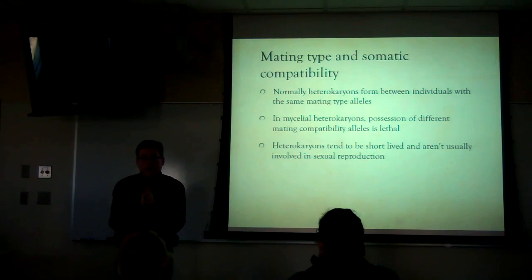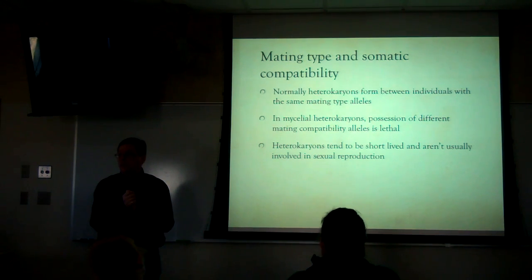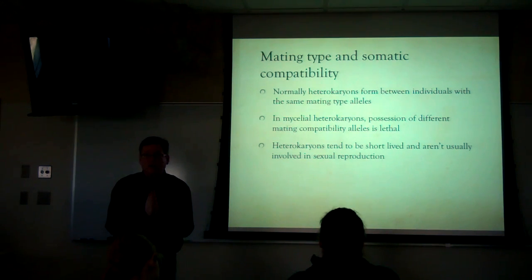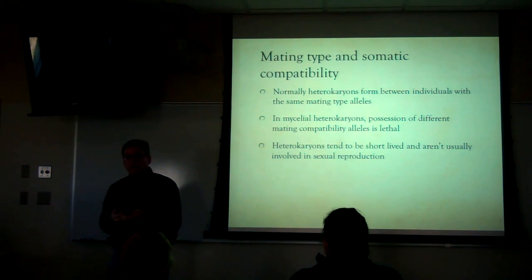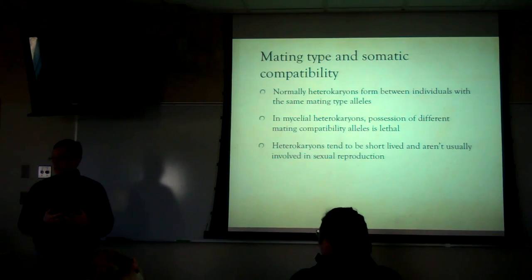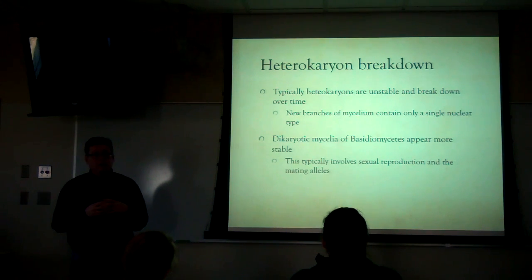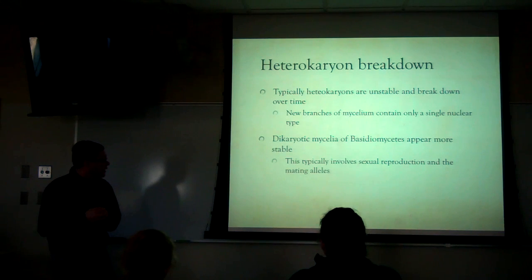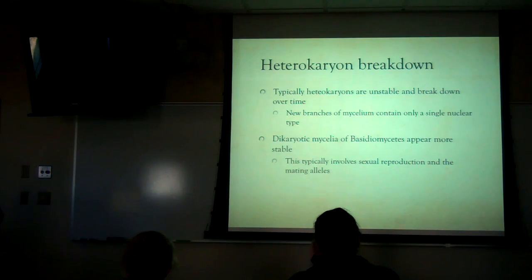When we have sexual compatibility, that's when heterokaryons — the dikaryon — actually can be stable for a long time. That seems to be something completely unique to the basidiomycetes. If you look at ascomycetes, they do this heterokaryosis quite a bit, but it's always unstable and breaks down very quickly. In the basidiomycetes, the dikaryons involve sexual compatibility, and we'll talk about the alleles that control that — that seems to be something that can actually last a very long time, depending on the situation.